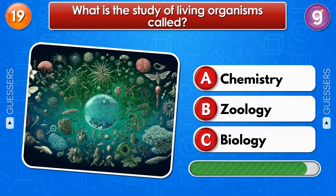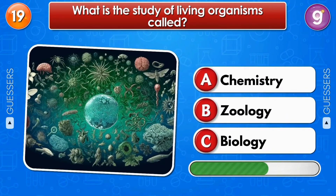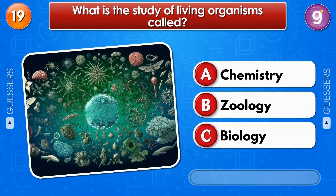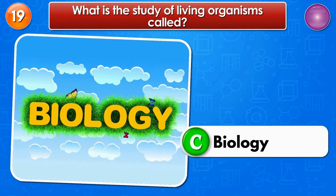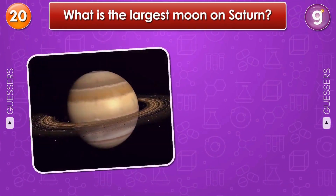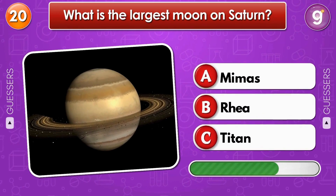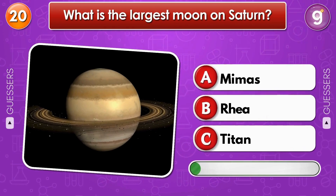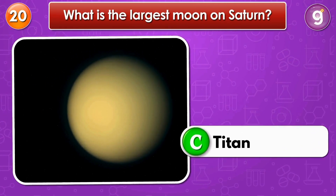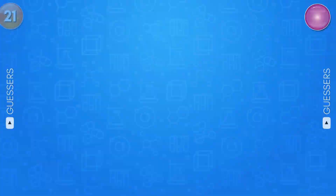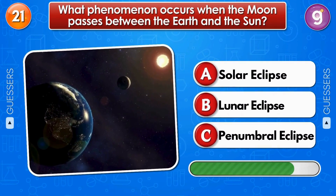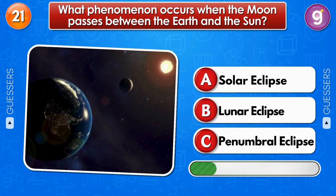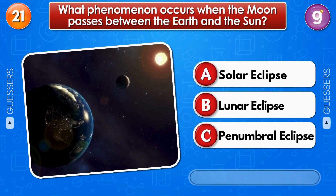What is the study of living organisms called? It's called biology. What phenomenon occurs when the moon passes between the earth and the sun? Solar eclipse.